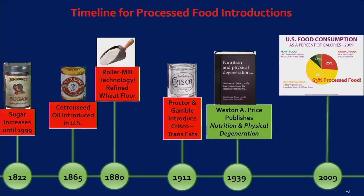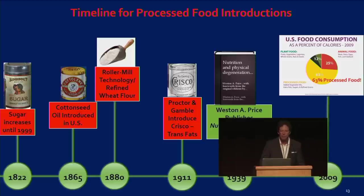What about processed food during this time? From 1822 to 1999, sugar consumption rose 17-fold — nutrient-deficient food. Cottonseed oil, our first vegetable oil, was introduced right after the American Civil War, around 1865–1866. Roller mill technology created refined white wheat flour in 1880. In 1911, Procter & Gamble introduced Crisco — trans fats. Those are our four processed foods. Weston Price recognized this and in his treatise, Nutrition and Physical Degeneration, connected these four foods to what became Diseases of Civilization. Nobody listened — or we wouldn't be in this mess.